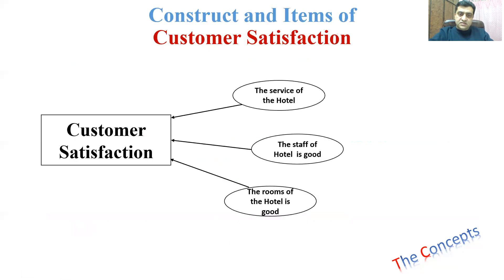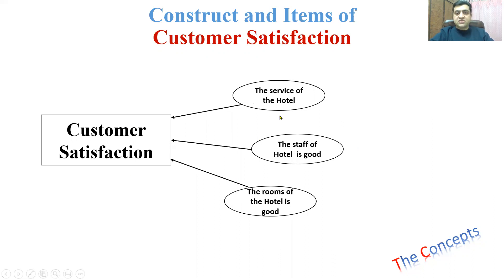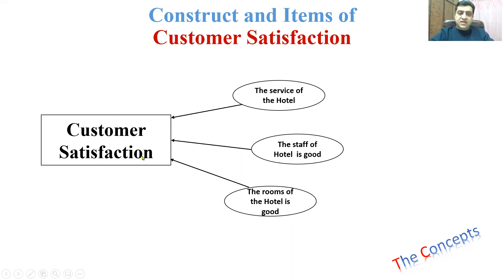Let's understand this in the form of the difference between a construct and items. Let's suppose that customer satisfaction is our construct — a broad concept. In order to measure this customer satisfaction, what kind of questions are we going to ask the customer? Let's suppose we ask that customer three questions, and we are talking about the customer satisfaction of our hotel. First, we will ask about the service of the hotel — if the service was okay or not. If he says the service was very good, that indicates the customer is satisfied.